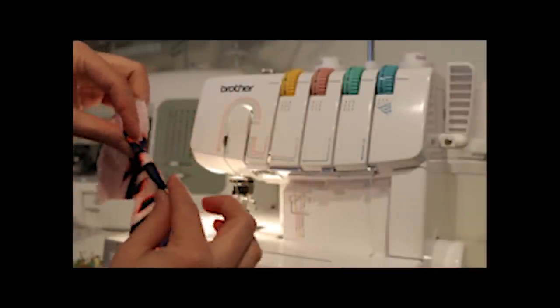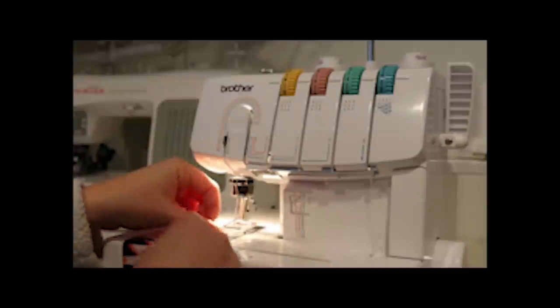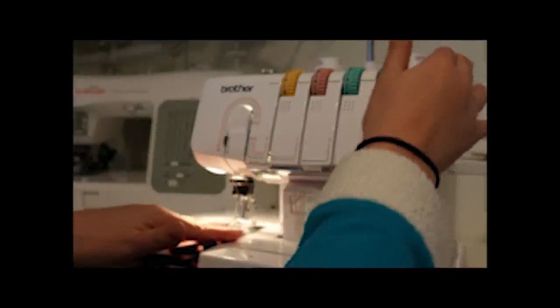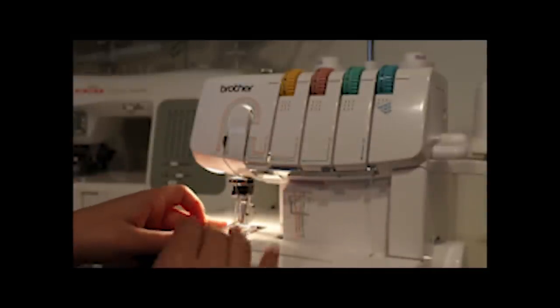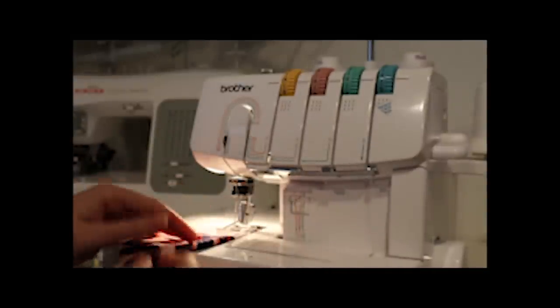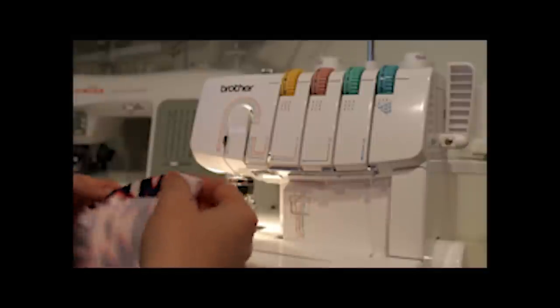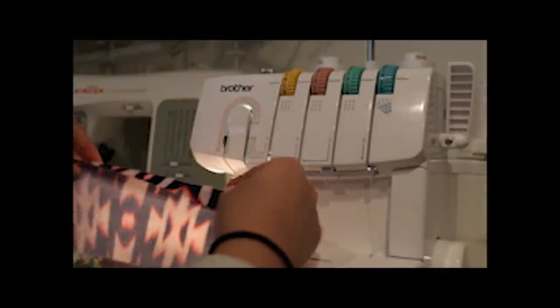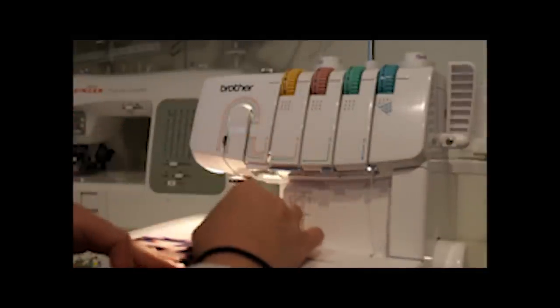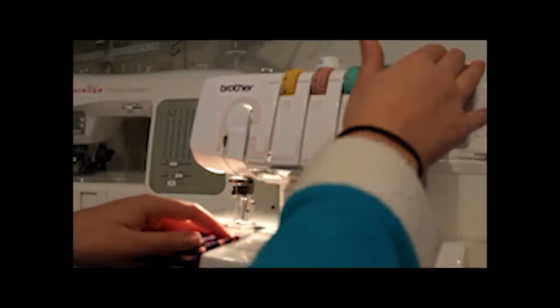You could also use knit interfacing as well. I just like the hem tape best because it's sticky and holds it in place. With your cover stitch, the wrong side is going to face down, so you would have your hem this way, and the right side faces up.